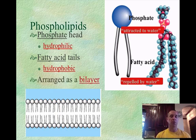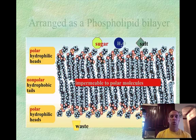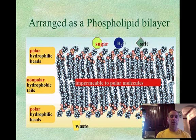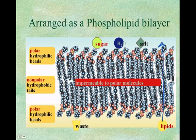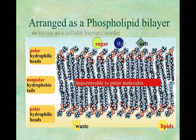This bilayer structure serves as a barrier for molecules. For example, a lipid molecule, since it is non-polar, can freely move back and forth across the membrane. However, salt, water, sugar, and waste molecules, which have a polar nature, are unable to move across this phospholipid bilayer without some help.